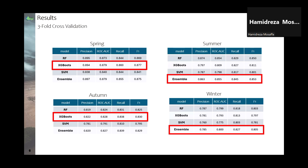These are the evaluation results of the threefold classification for each season. All four models achieve good performance across all seasons, though we observe some variation in the best model per season. For spring and autumn, XGBoost shows strong performance; for summer and winter, the ensemble model emerges as the best choice. The differences between Random Forest and XGBoost are small, but we select the best-performing model for each season's final product.